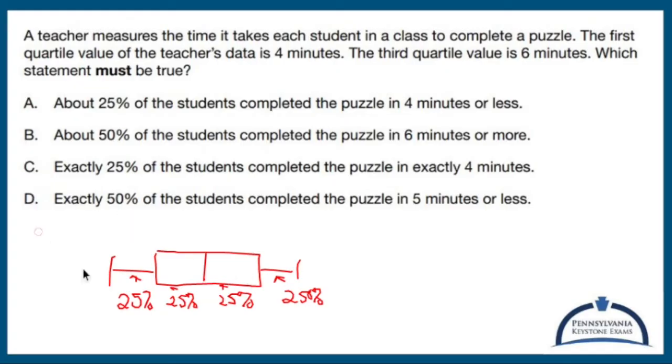Well, quartile one is this chunk right here. That's quartile one, and they say four minutes for that. Quartile three is that chunk right there, they say six minutes for that, which means in between quartile one and quartile three, you've got 50% of your data happening.